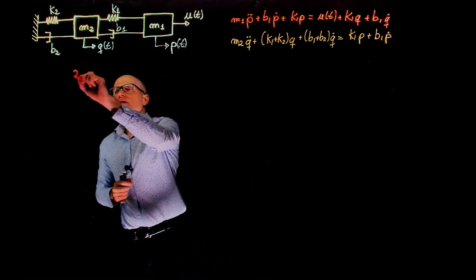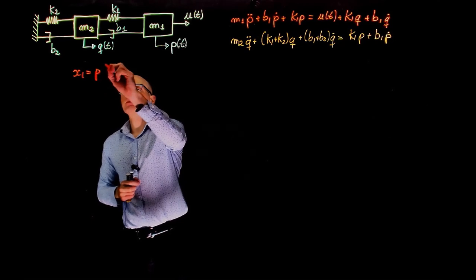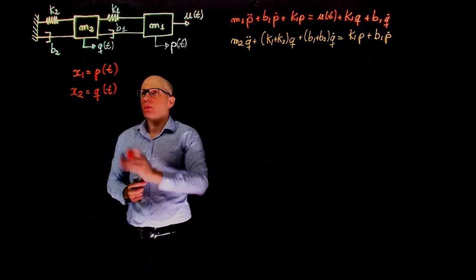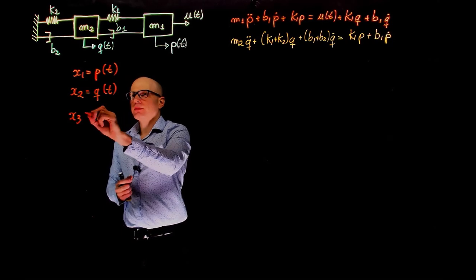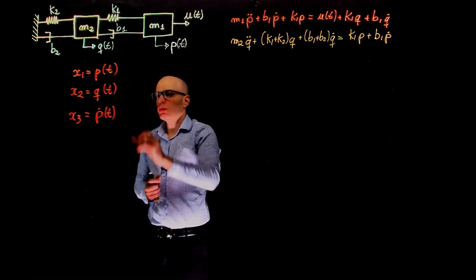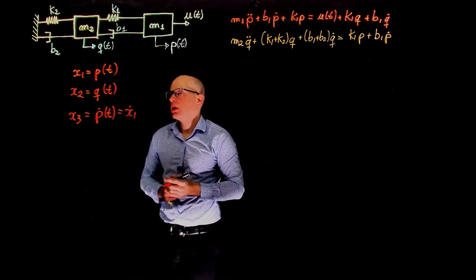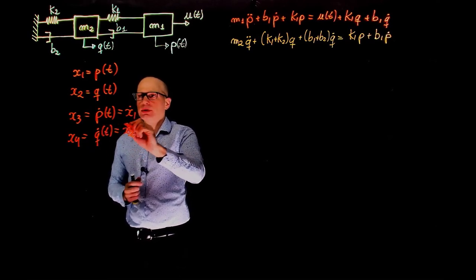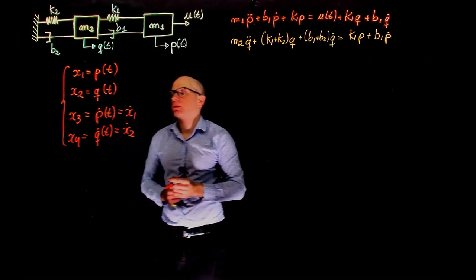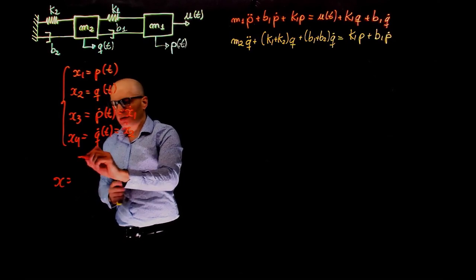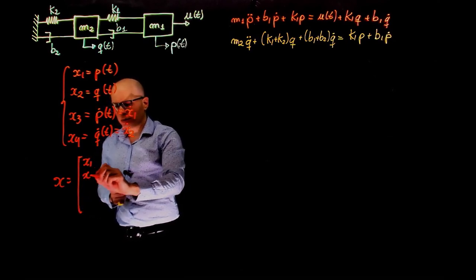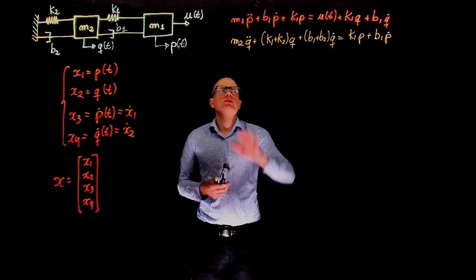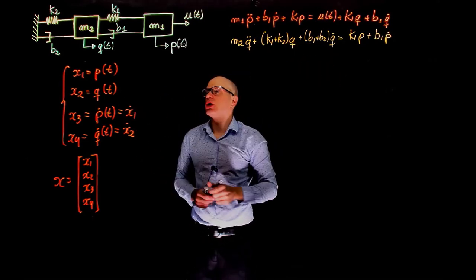We can assign the state variables as the position and velocity of each mass. For example, x1 = p(t) and x2 = q(t). We also need their derivatives, so x3 = p_dot(t), which equals x1_dot, and x4 = q_dot(t), which equals x2_dot. These are our four state variables, represented in vector format as x = [x1, x2, x3, x4]ᵀ. Now that we have defined the state variables, we can go back and rewrite the equations as a function of them.